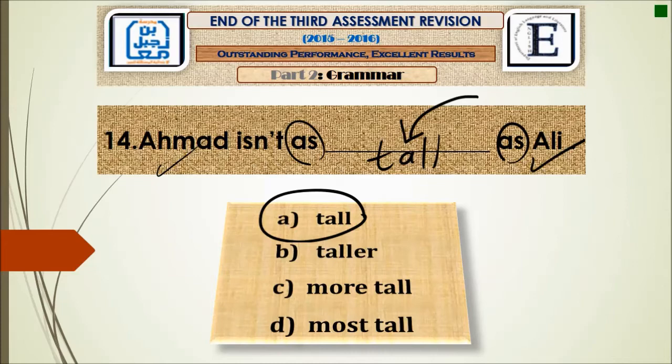Question number fourteen: 'Ahmad isn't as ___ as Ali.' Here we show similarity between two persons using the as...as structure. Between them we write the adjective in its base form, without any addition. So the answer is tall: 'Ahmad isn't as tall as Ali.'